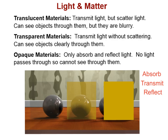Some materials, like this one right here, are translucent. Translucent materials transmit light but they also scatter it, so you can't see through them clearly and the object behind it appears blurry. Transparent material, on the other hand, transmits light without scattering it, so you can see objects clearly through the transparent material.